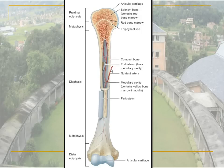The nutrient artery enters through the nutrient foramen, which divides into branches within the medullary cavity and supplies the bone.